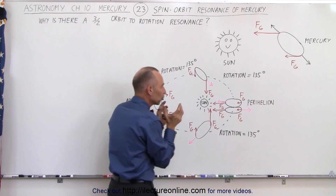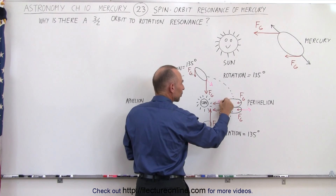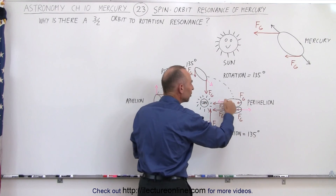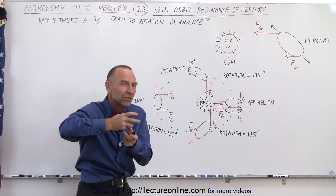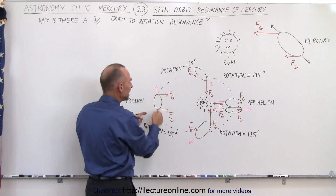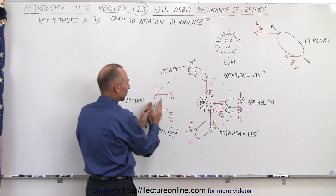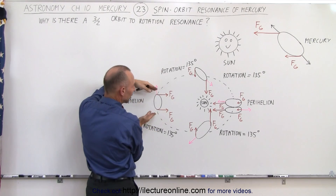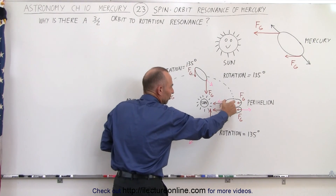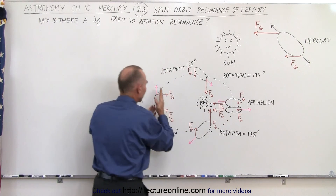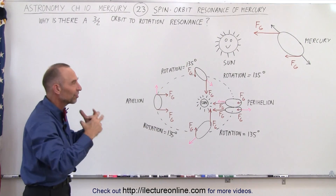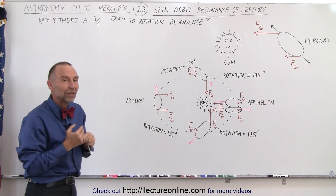The gravitational force difference — between the force pulling the near side of Mercury toward the Sun and the force pulling the far side — is greatest at the moment Mercury passes through perihelion, so it's locked into that. When Mercury is farthest from the Sun, the forces on both ends are equal because both ends are at an equal distance from the Sun. This gives Mercury its lowest energy orbit state, and therefore it's forced into that particular configuration.